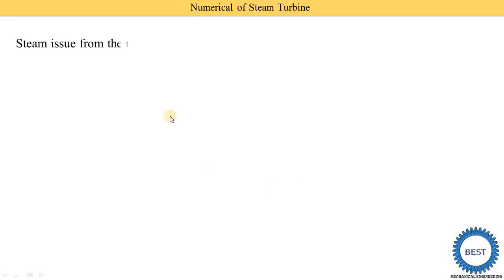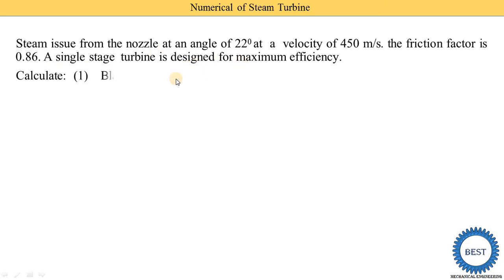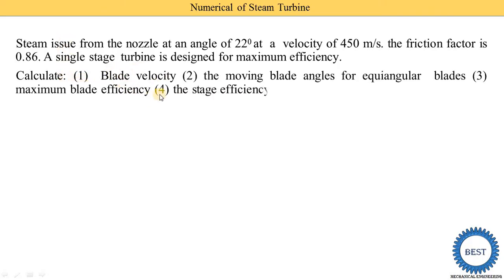First we understand the problem statement. Steam is issued from the nozzle at an angle of 22 degrees, means alpha is equal to 22. The velocity of steam is 450 meter per second, means V1 is given as 450 meter per second. The friction factor is 0.86. A single stage turbine is designed for maximum efficiency. We need to calculate first the blade velocity, Vb.